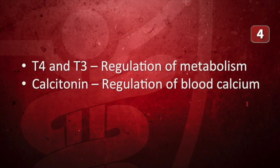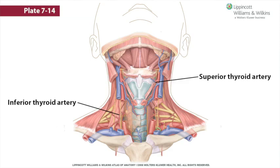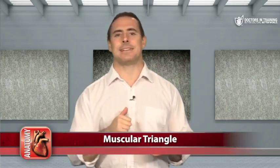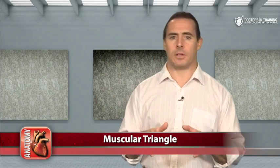The thyroid also produces calcitonin, which is involved in the regulation of blood calcium. The superior and inferior thyroid arteries supply the thyroid gland. The inferior thyroid artery is usually a branch of the thyrocervical trunk, which arises from the first part of the subclavian artery. The superior thyroid artery is a branch of the external carotid artery. About 10% of people also have a thyroid ima artery that branches from the aortic arch, or one of its branches, and ascends along the midline of the trachea to the isthmus of the thyroid gland.